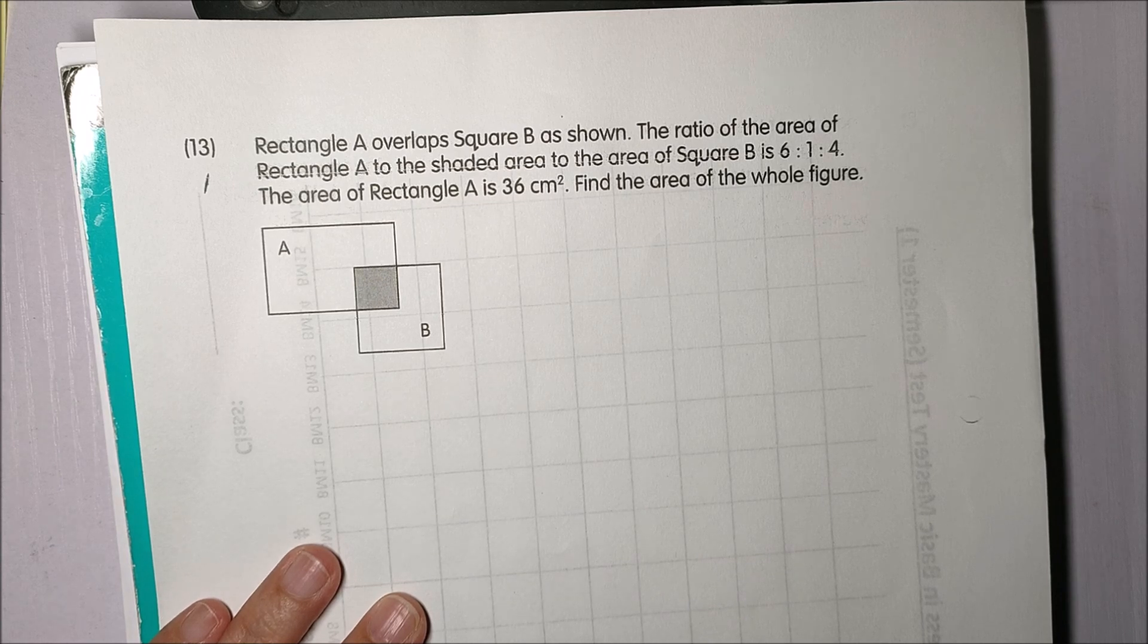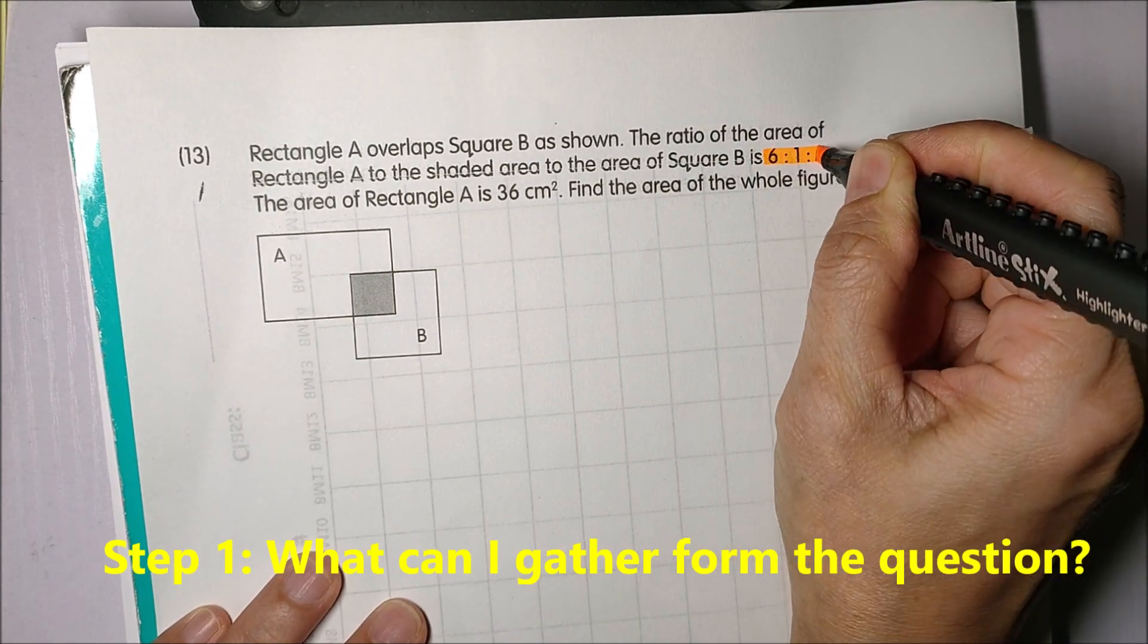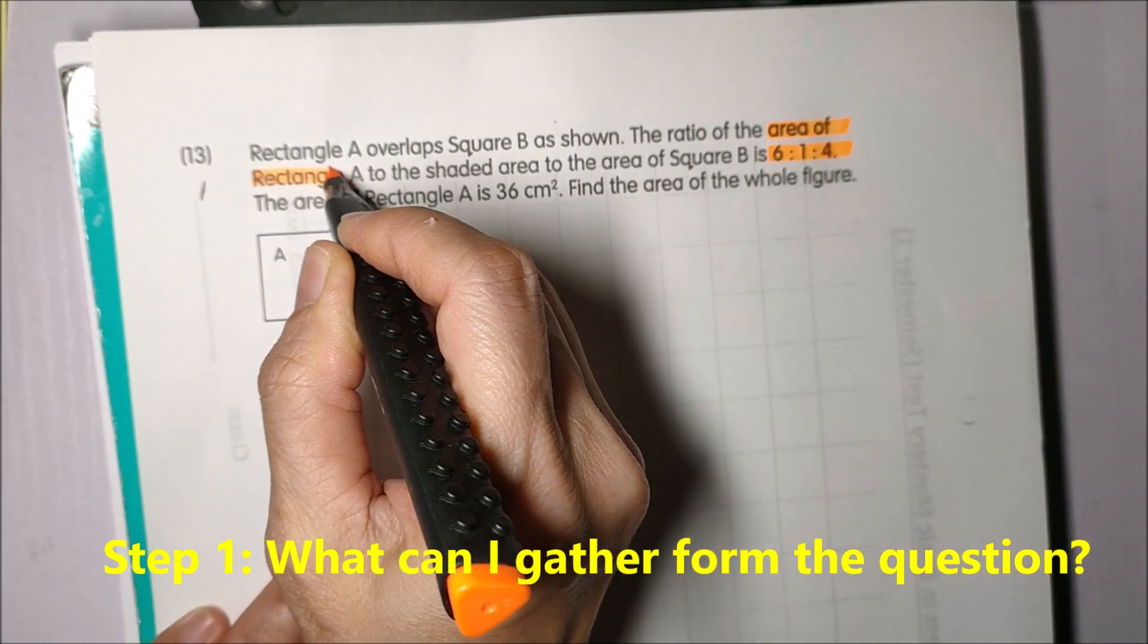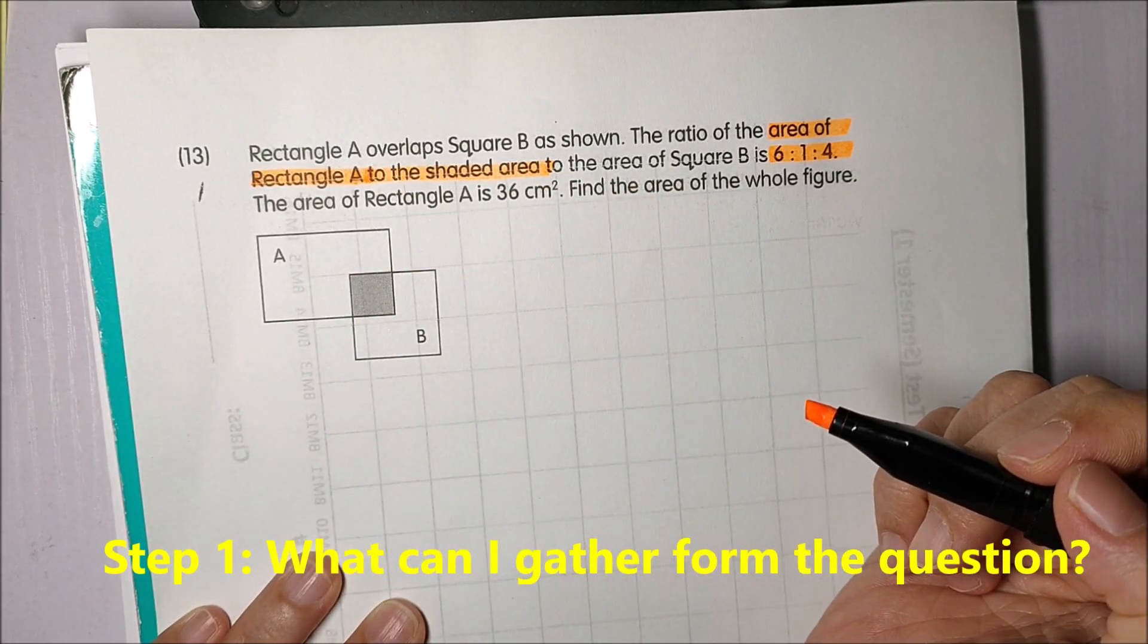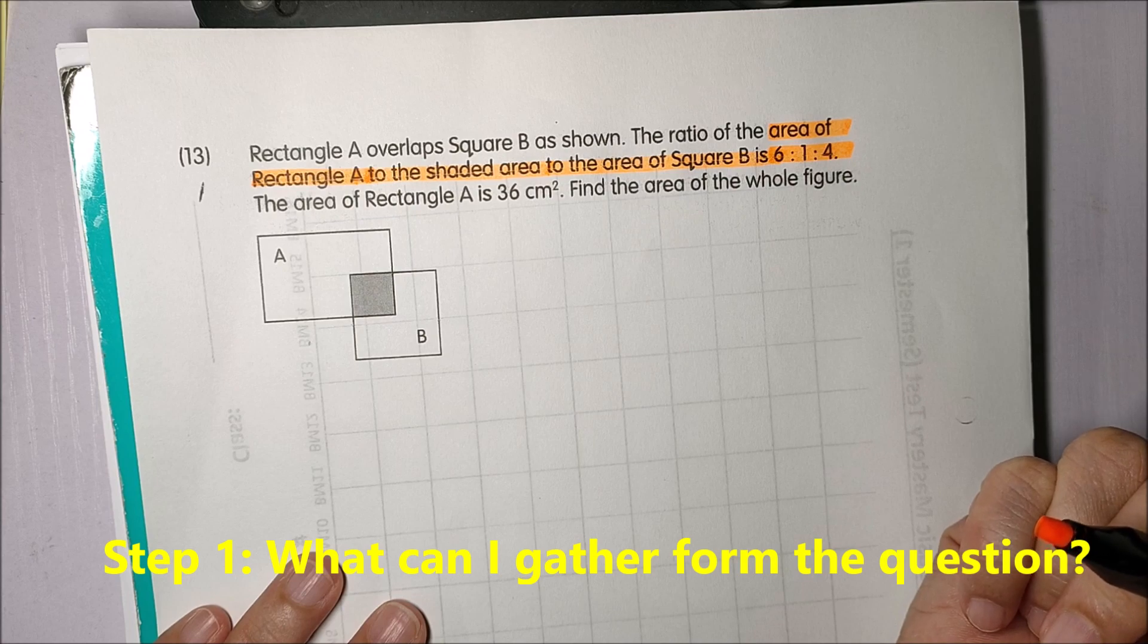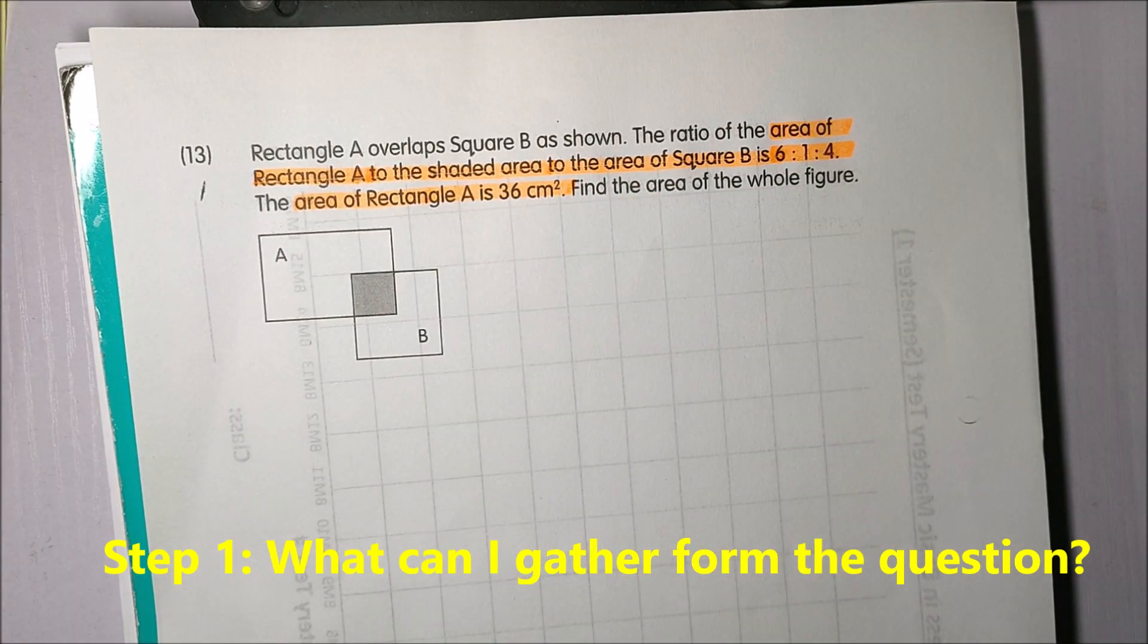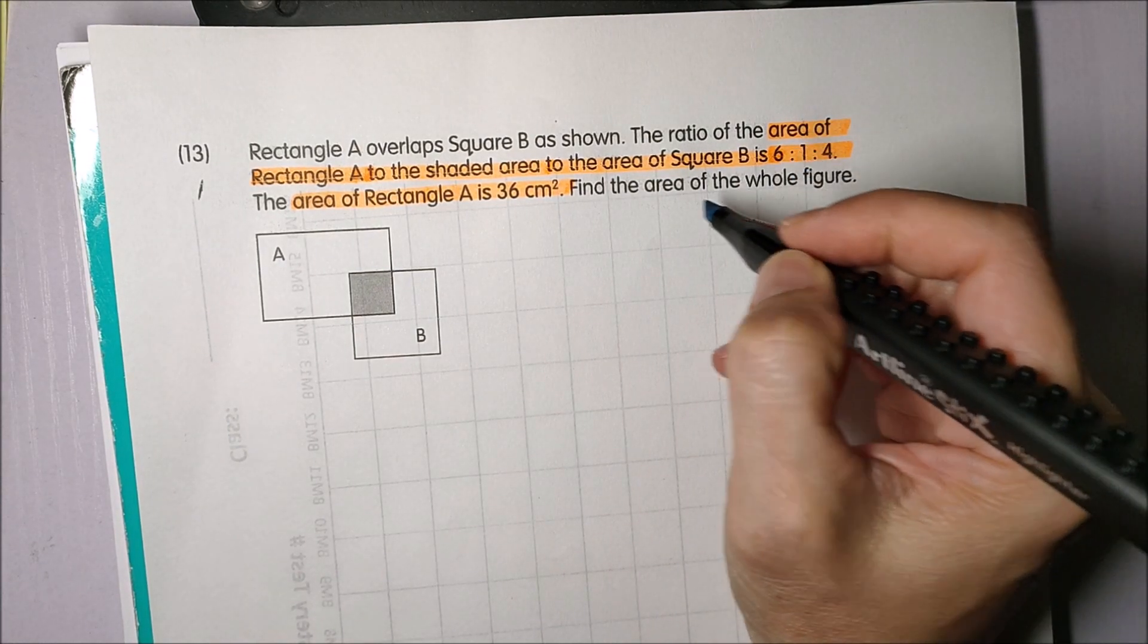So let's see what I can gather from the problem. I'm given a ratio and it is the ratio of the area of rectangle A to the shaded area to the area of square B. I'm also given the area of rectangle A which is 36 square centimeters. So I must find the area of the whole figure.